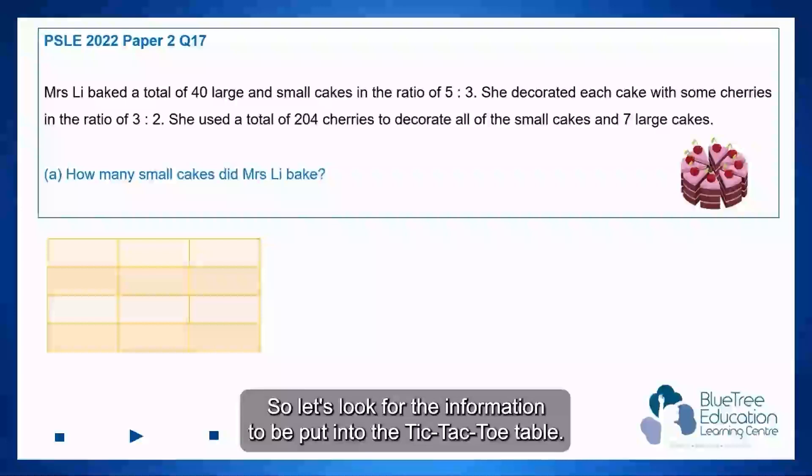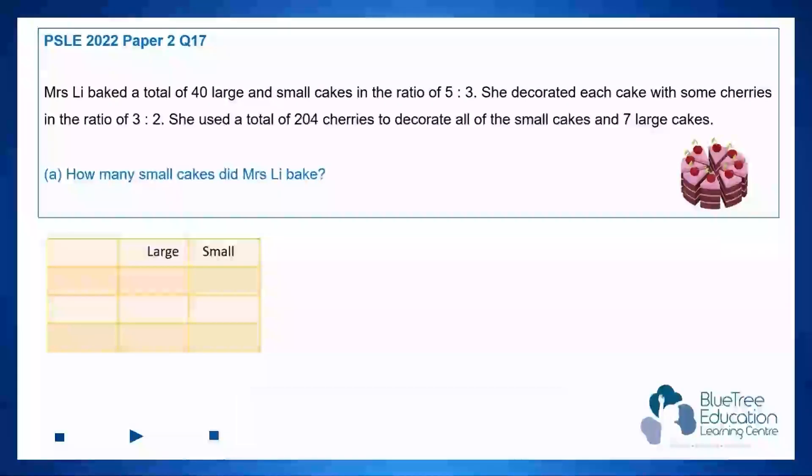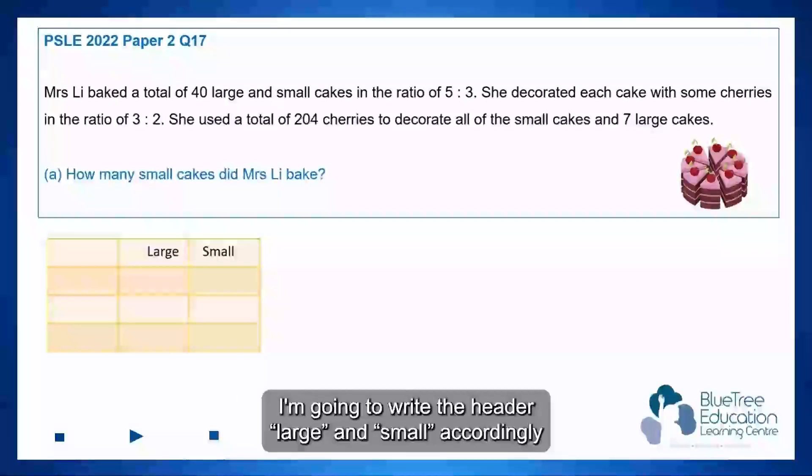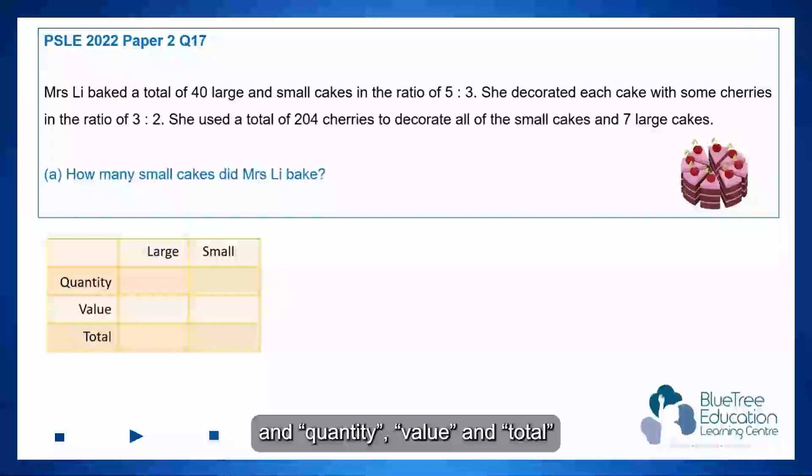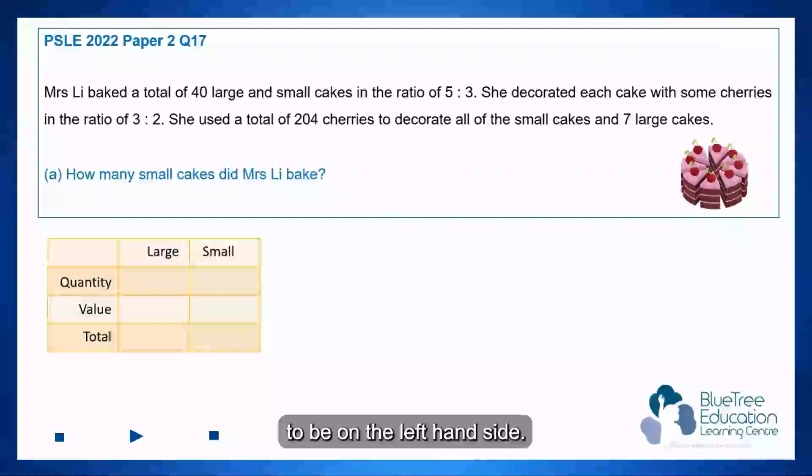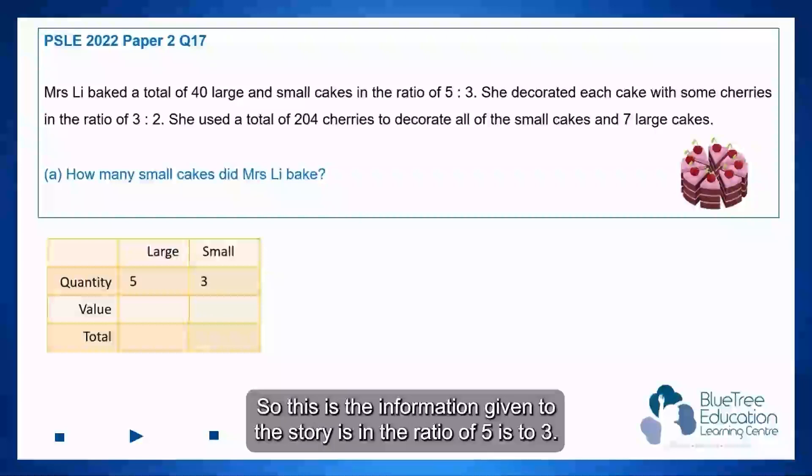So let's look for the information to be put into the tic-tac-toe table. I'm going to write the header large and small accordingly. And quantity, value, and total to be on the left-hand side. So this is the information given in the story. It's in the ratio of 5 is to 3.